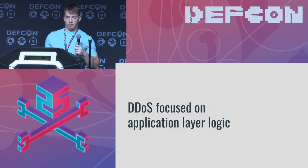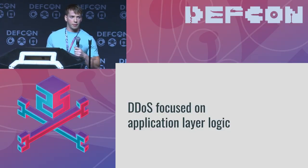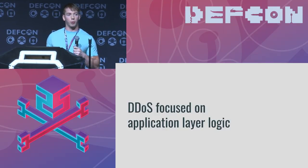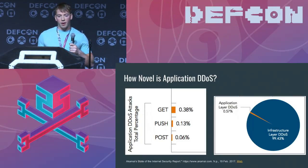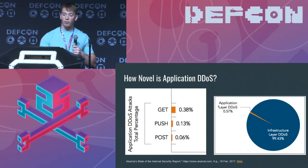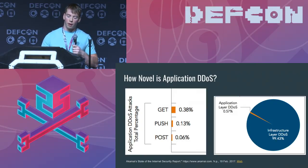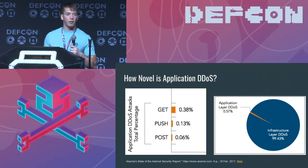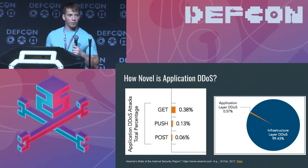Application denial of service is just a denial of service focused at the application layer logic. You've probably attended talks that focus on the network layer — terms like amplification attacks, etc. We've decided to focus on the application layer because in certain circumstances you can cause applications to become very unstable for a lot less requests. When doing research we identified that application DDoS isn't that novel — pulling from the Akamai State of the Internet Security Report, it accounts for basically 0.6% of all DDoS. Most of the DDoS Akamai saw were GET requests, and only 10% of application DDoS were POST requests. Although it's not very common, attackers are privy to this exploitation vector and are using it in certain circumstances.